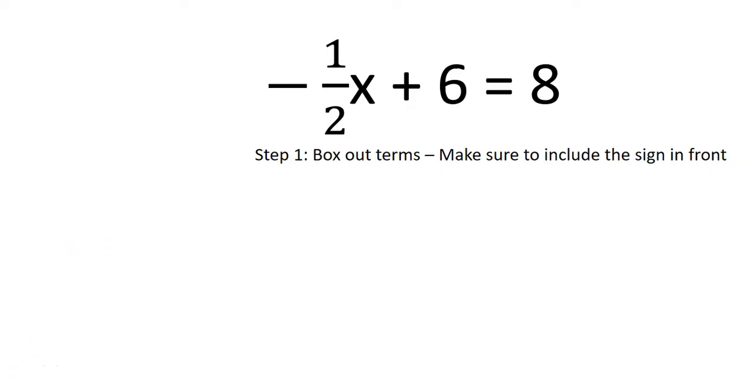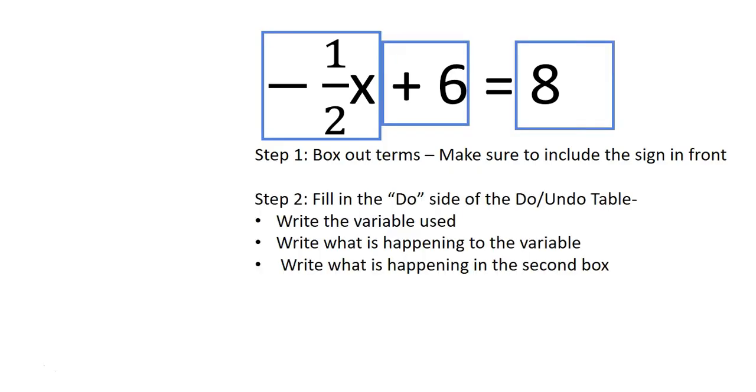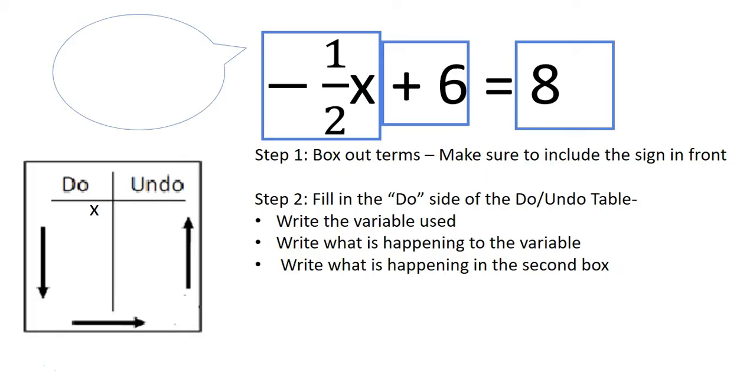We will proceed with steps 1 and 2 in the same manner as before, but you will need to understand that negative 1 half x is the same thing as x divided by negative 2. You must decide if you are going to treat the variable term as multiplying a negative fraction or dividing by a negative integer. We will be dividing by a negative integer.